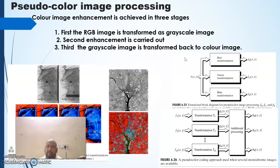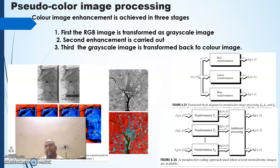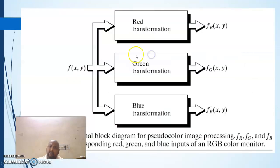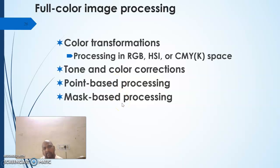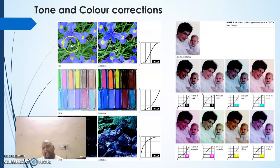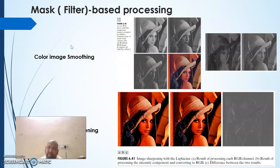For pseudo color image enhancement, the image is first converted to grayscale, then the intensity is analyzed, and based on intensity levels, different colors are introduced to highlight information that is not expressed properly. Other processes include color transformation, point-based processing, mask-based processing, and tone and color adjustments.